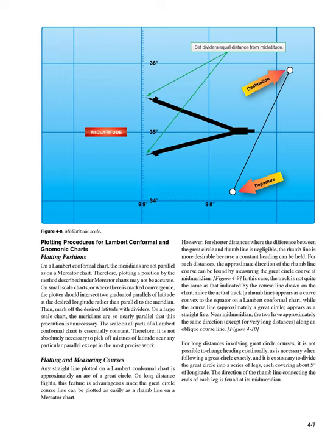However, for shorter distances where the difference between the great circle and rhumb line is negligible, the rhumb line is more desirable because a constant heading can be held. For such distances, the approximate direction of the rhumb line course can be found by measuring the great circle course at the mid-meridian. Figure 4-9. In this case, the track is not quite the same as that indicated by the course line drawn on the chart, since the actual track — a rhumb line — appears as a curve convex to the equator on a Lambert conformal chart, while the course line appears as a straight line.